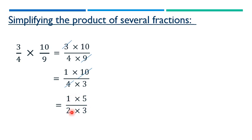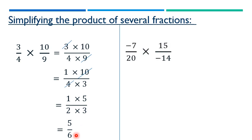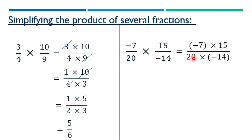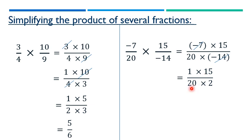With no more common factors, we multiply: numerator gives 1 times 5 equals 5, denominator gives 2 times 3 equals 6, so the answer is 5 over 6. Another example: minus 7 over 20 times 15 over minus 14. Minus 7 and minus 14 share a GCF of minus 7, giving 1 and 2. Then 15 and 20 share a GCF of 5, giving 3 and 4.